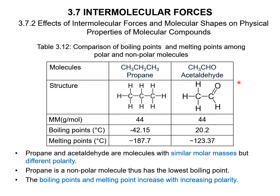This is a comparison of boiling points and melting points among polar and non-polar molecules — propane and acetaldehyde. Acetaldehyde is a polar molecule because it contains a highly electronegative atom, while propane has a symmetrical shape and is non-polar. Both have the same molar mass, but their boiling points and melting points are different due to their different polarity.